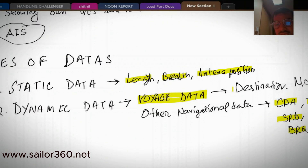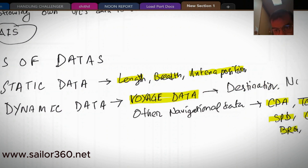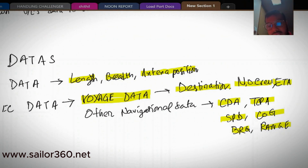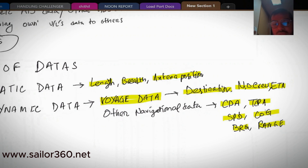Voyage data includes destination of the ship, number of crew on board, and estimated time of arrival (ETA). In many books, AIS data is classified as three types: static data, dynamic data, and voyage data.